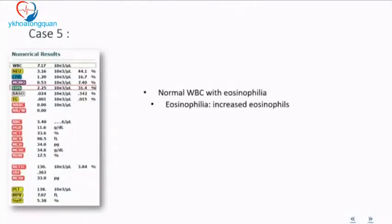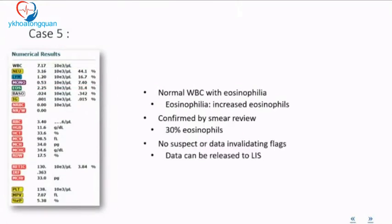Case five — my last case — is a case of normal WBC count with eosinophilia of almost 30%, confirmed at 31% on the analyzer and 30% on smear review. There were no other flags except eosinophilia. The patient was a middle-aged woman from the Middle East. With auto-reporting, the result was released automatically since no abnormal flags were triggered, though the clinician was surprised by the degree of eosinophilia.